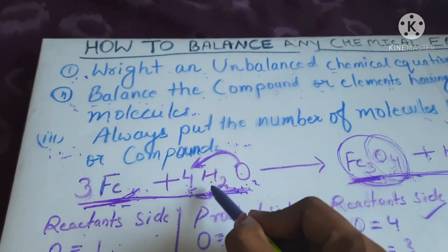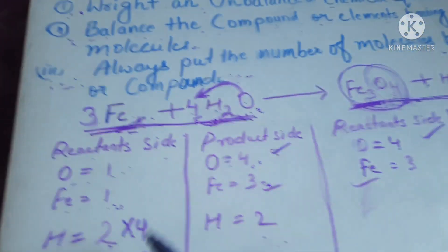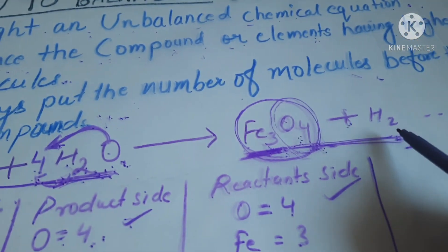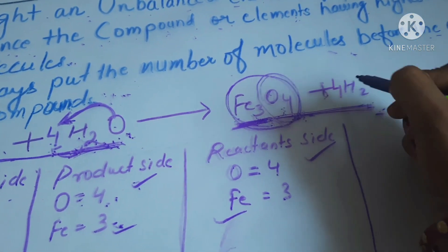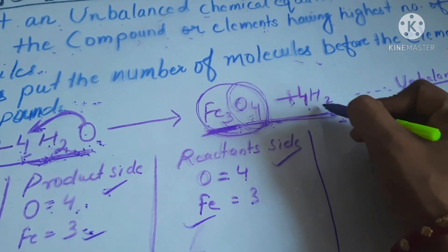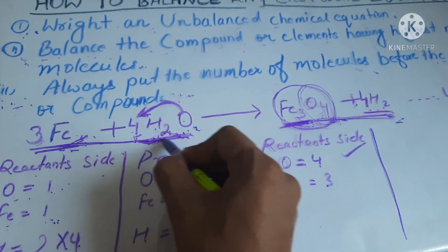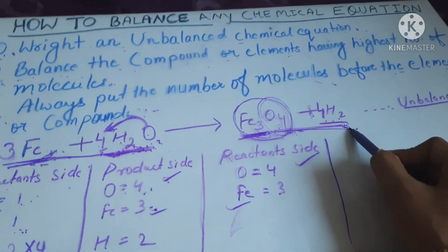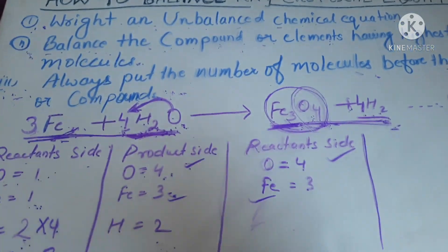Third is hydrogen. In the reactant side there are eight molecules of hydrogen, but in the product side only two molecules. So we have to put four before the hydrogen. Now hydrogen is also balanced — there are eight molecules of hydrogen in the reactant side and eight molecules of hydrogen in the product side. In this way, we can balance any chemical equation.